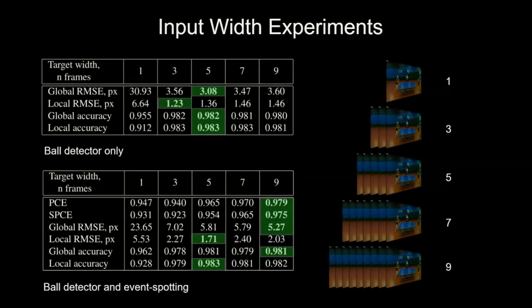Also, we examined the width of the input tensor, varying from 1 to 9 frames. As you can see on the lower table, in case of event spotting metrics, 9 frames was the most beneficial choice without drastic decrease in ball-related metrics.